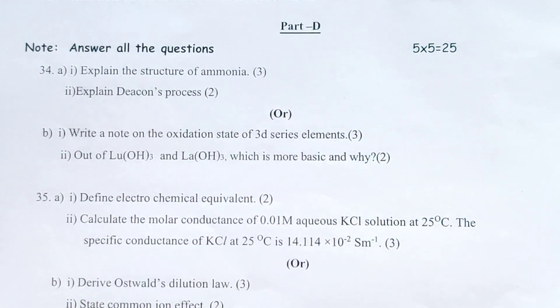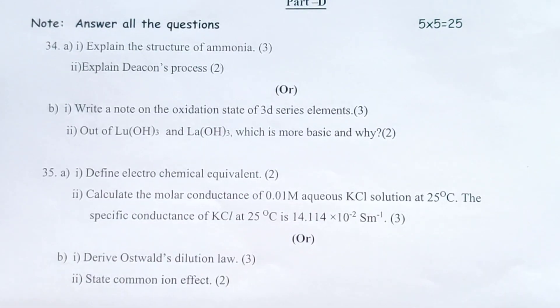35. a) i) Define electrochemical equivalent. ii) Calculate the molar conductance of 0.01 M aqueous KCl solution at 25°C. The specific conductance of KCl at 25°C is 14.114 x 10^-2 S m^-1. b) i) Derive Ostwald's dilution law. ii) State common ion effect.